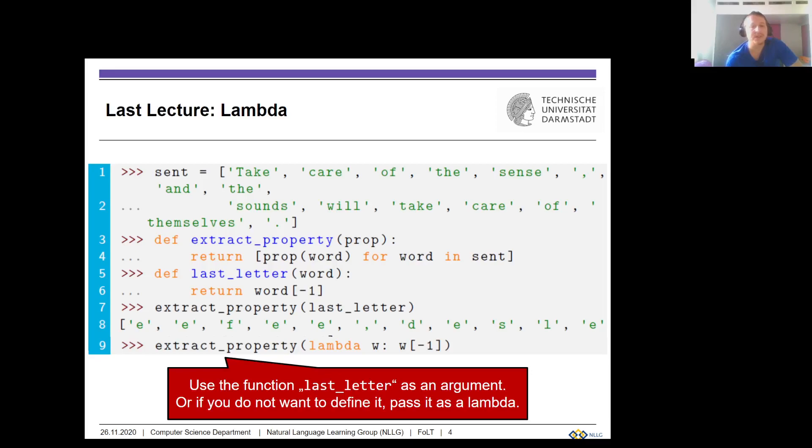If the function was to get the last letter, we can put our function into the other function and for each word in the sentence we get the last letter. We can equivalently do this with lambda notation, which is a convenient way that makes life easier because we don't always have to write down the function in explicit form.